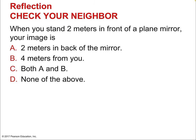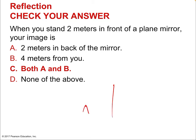When you stand two meters in front of a plane mirror, where is your image? Would it be two meters in back of the mirror, four meters from you, both A and B, or none of the above? It's both, because two meters in back and four meters from you mean the same thing — you're here two meters in front of the mirror, the image is formed back an equal two meters behind the mirror, and two plus two equals four. So they're both the correct answer.